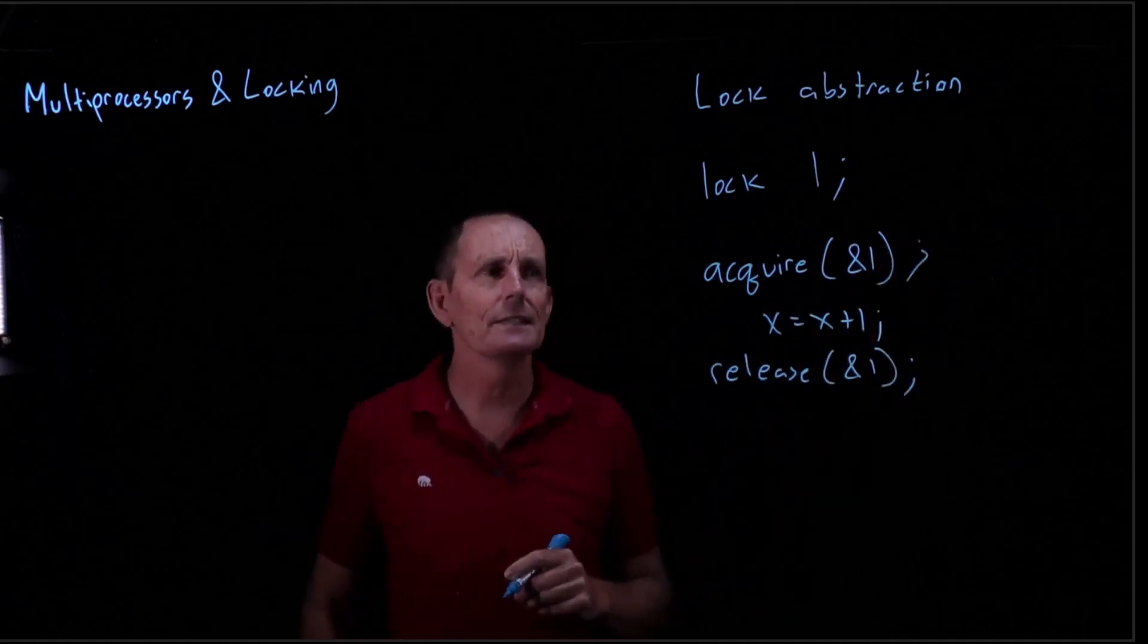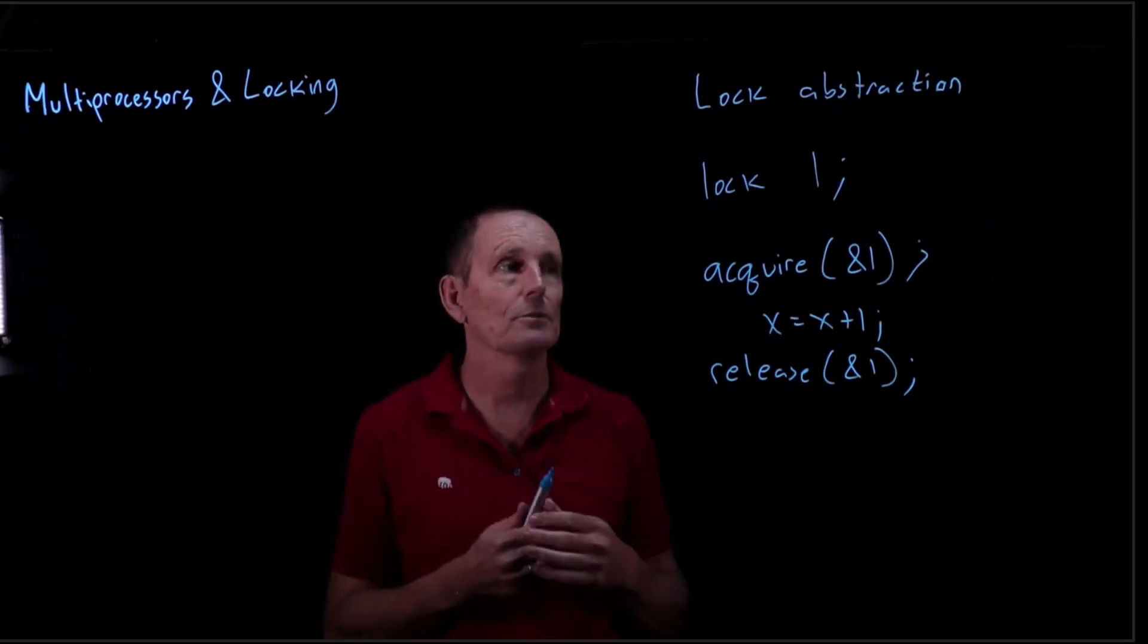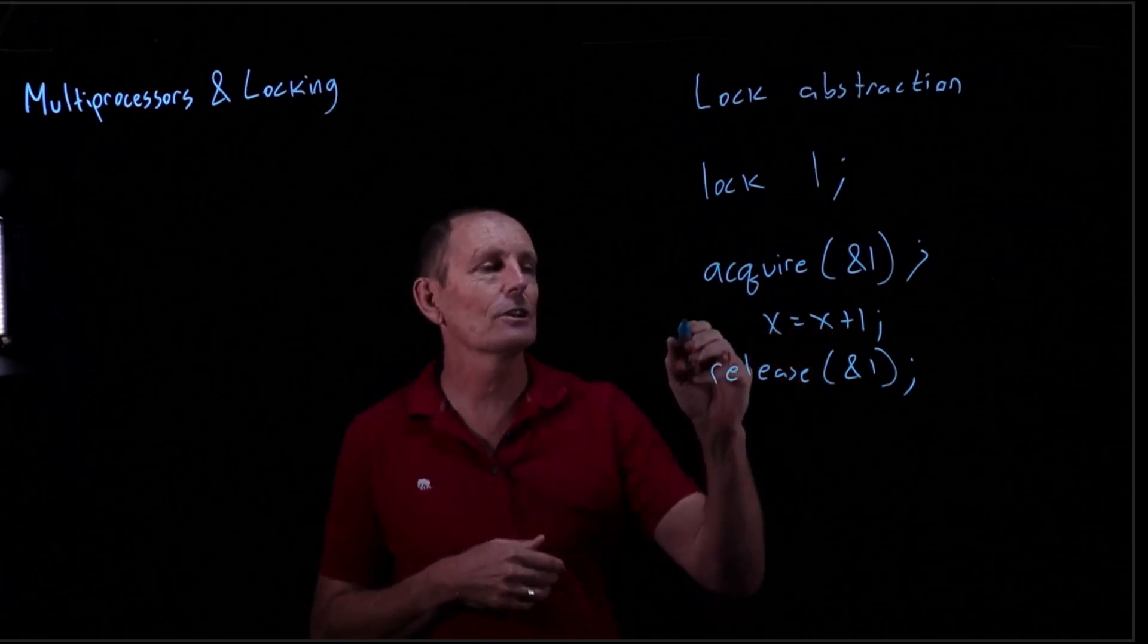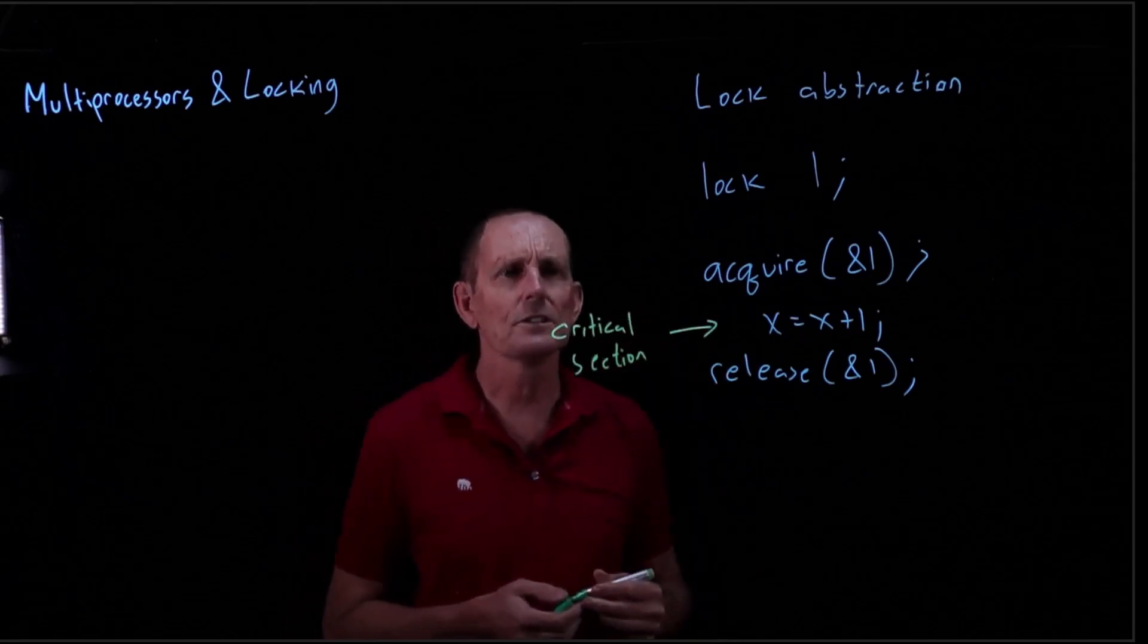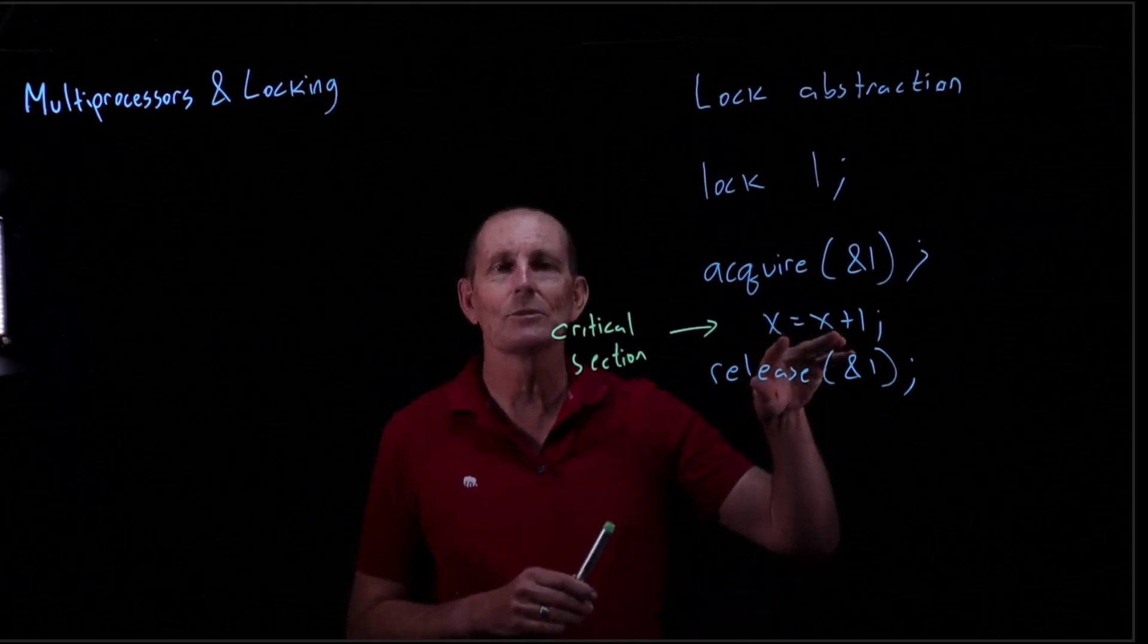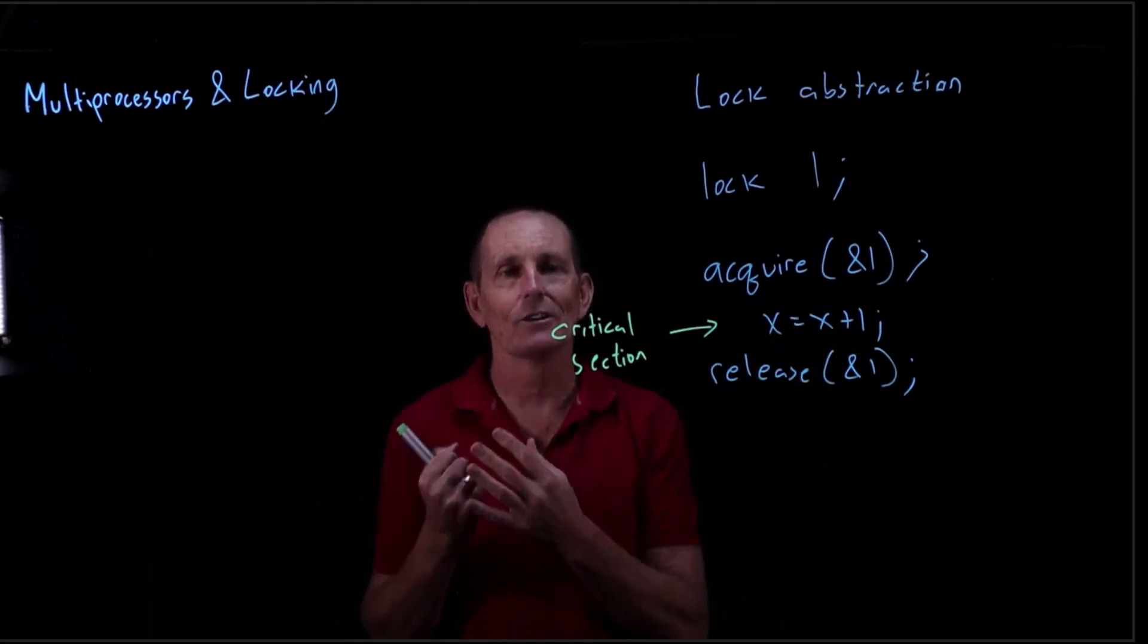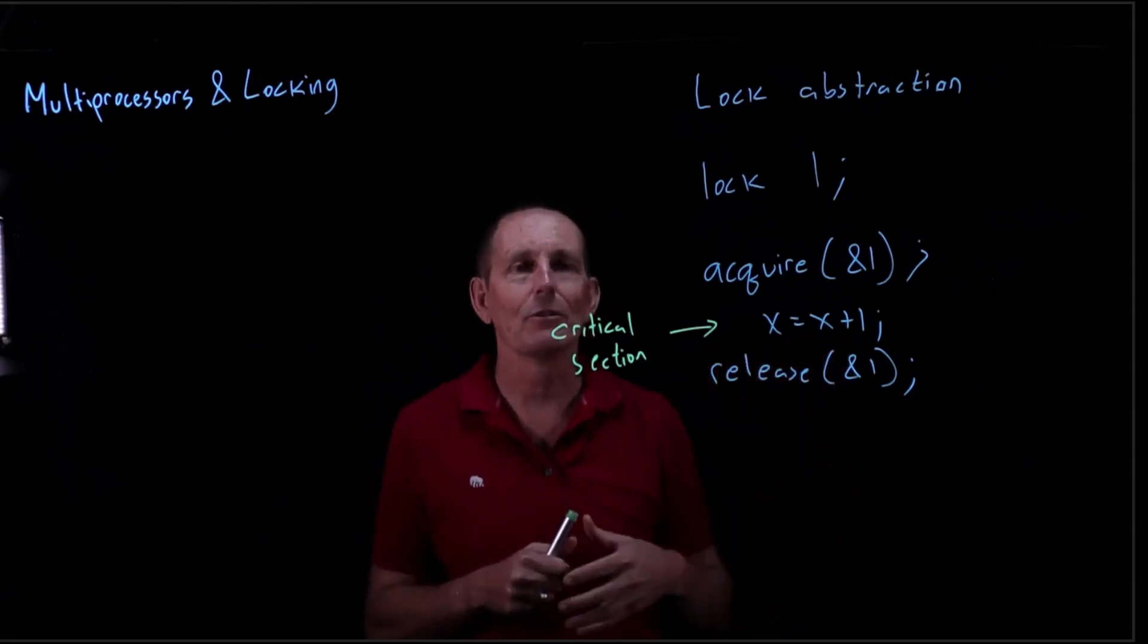The idea is we can have multiple processors or multiple threads trying to execute this critical section. Our goal is to make sure only one processor executes this critical section at a time, because if we're not careful when x equals x plus 1, one process can read an old value of x and increment it, a new process can read an old value of x and increment it, and one writes then the other writes. And we haven't really gone up by two.